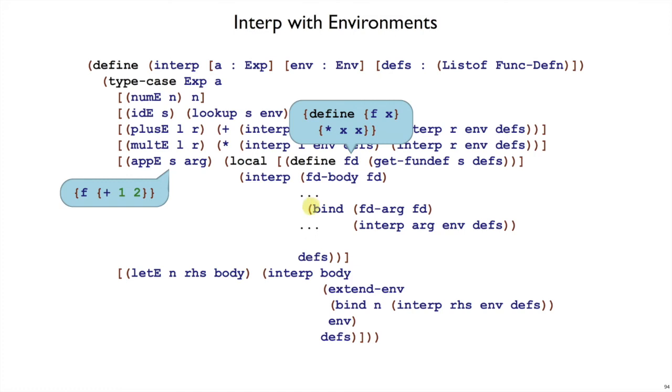I've left some dot dot dots, though, because I haven't talked about which environment we extend with the binding. What namings are in effect as we go to the body? And let's take a little detour with one more example.